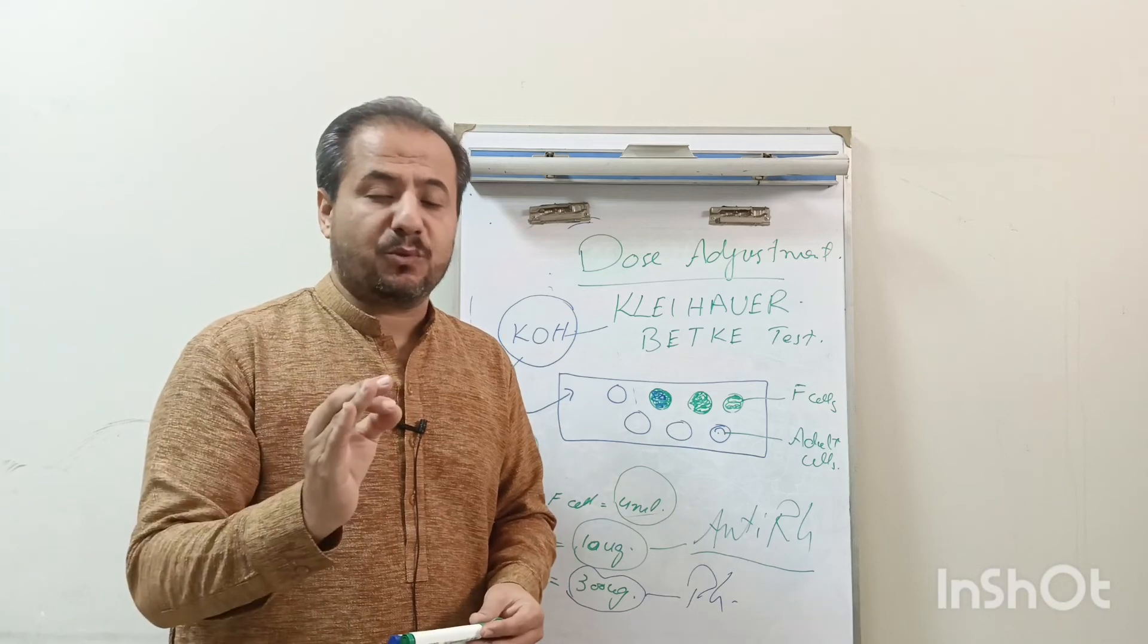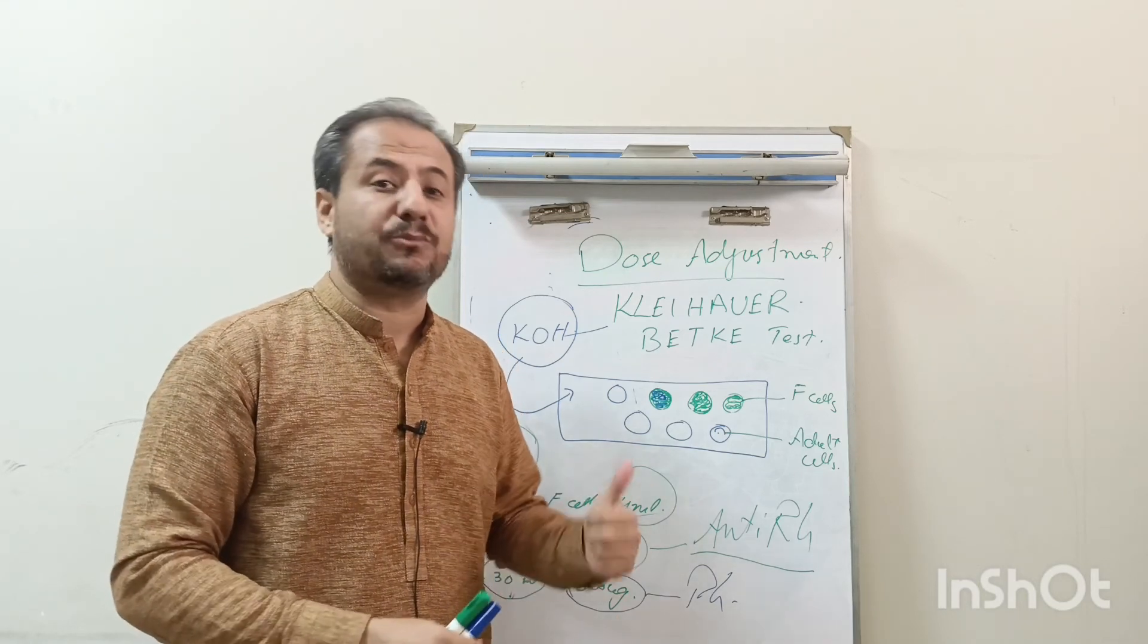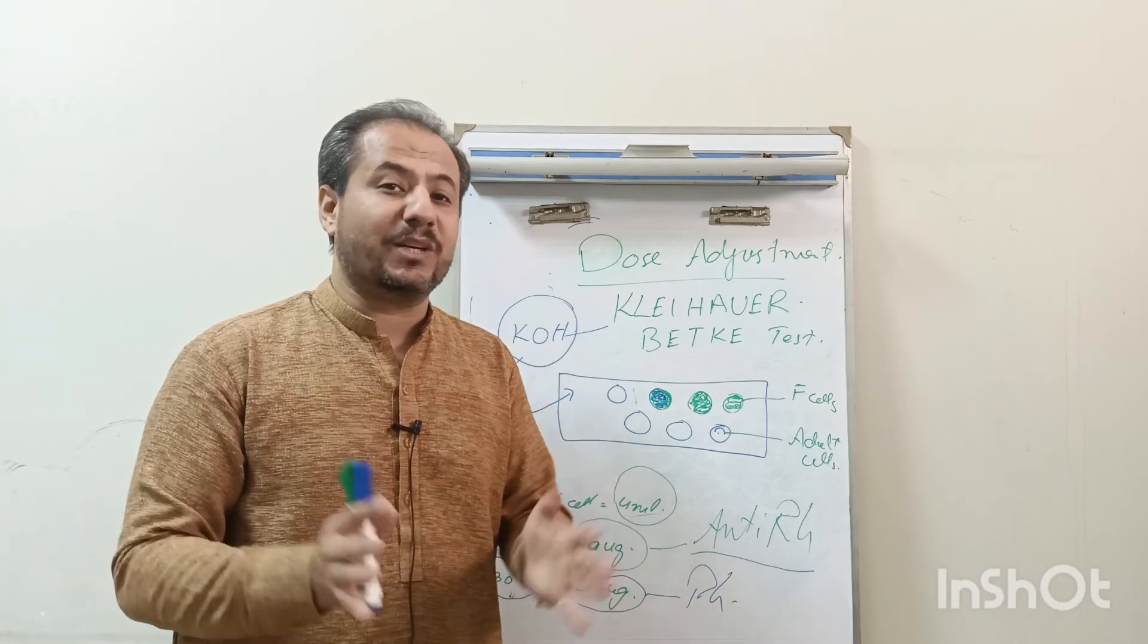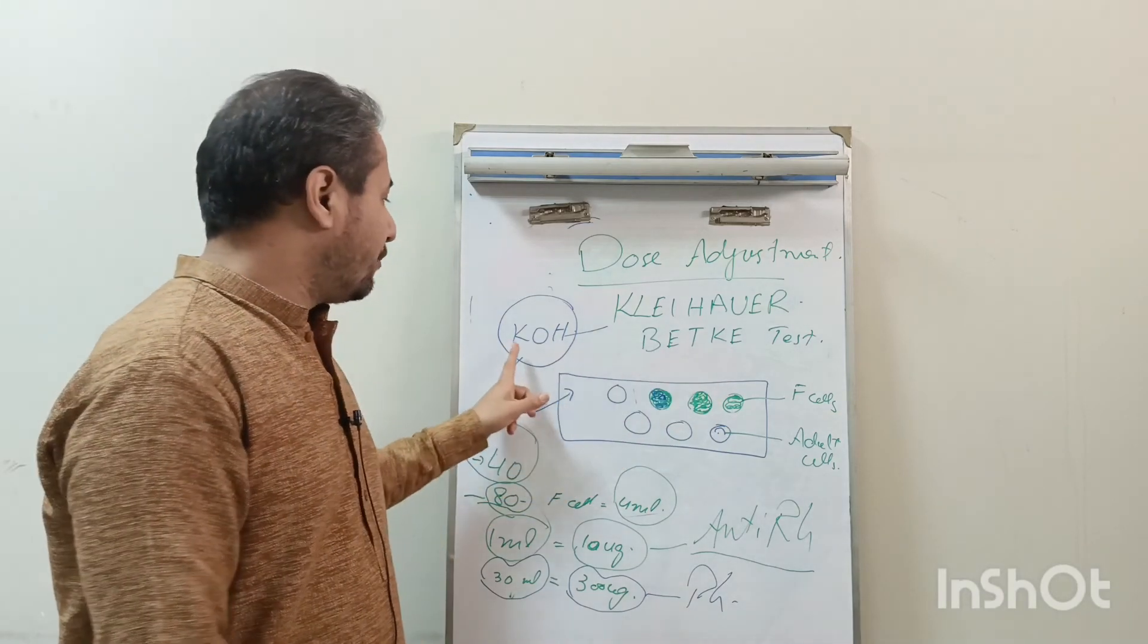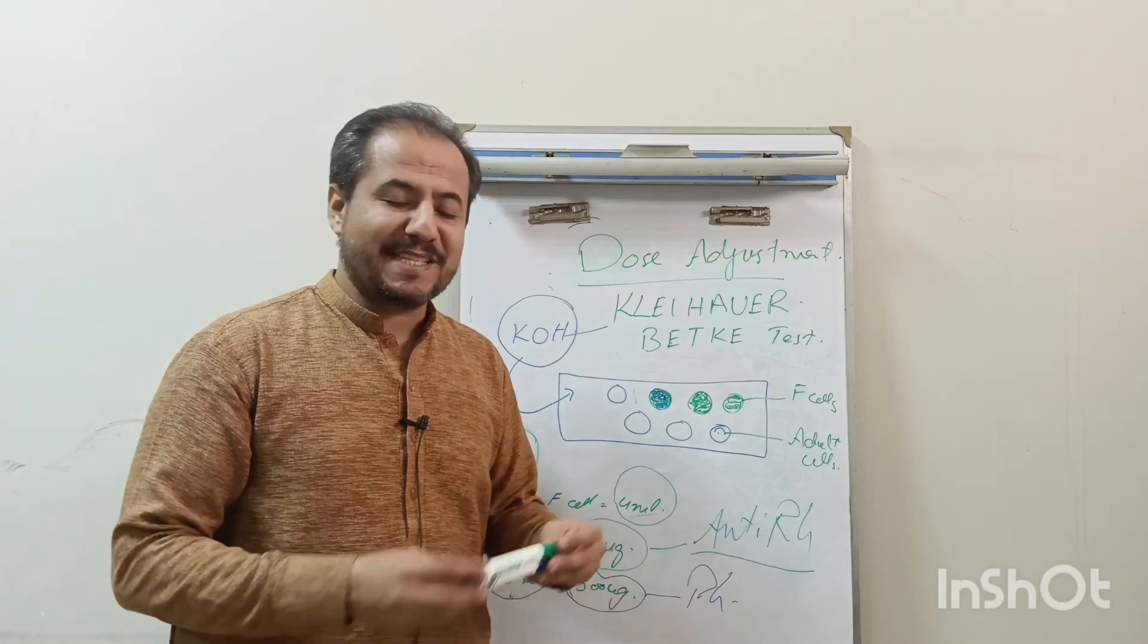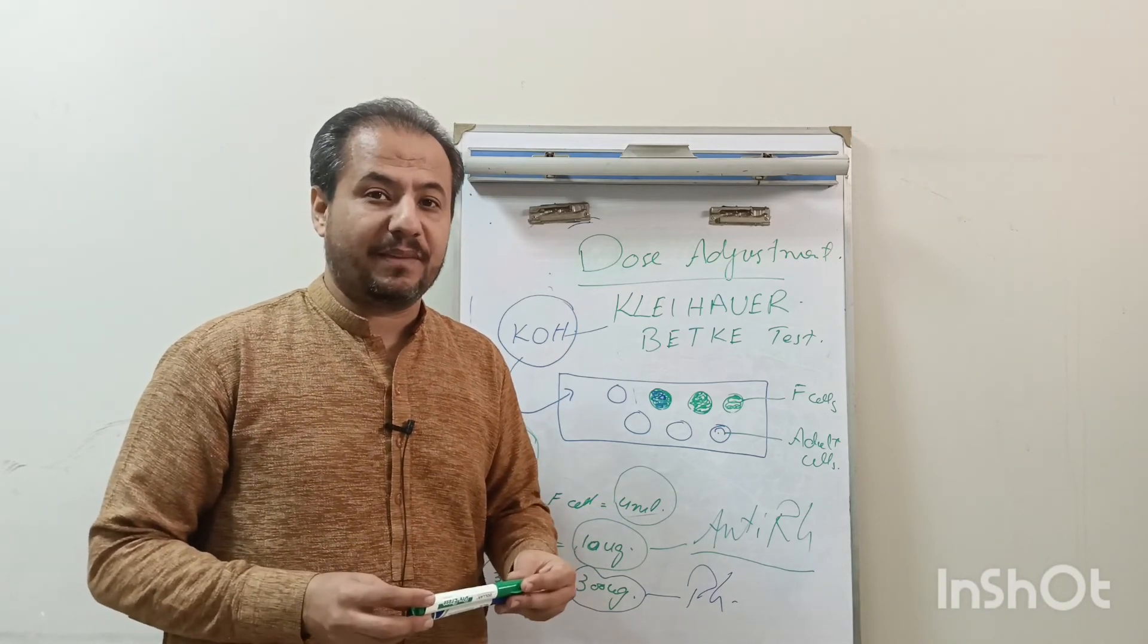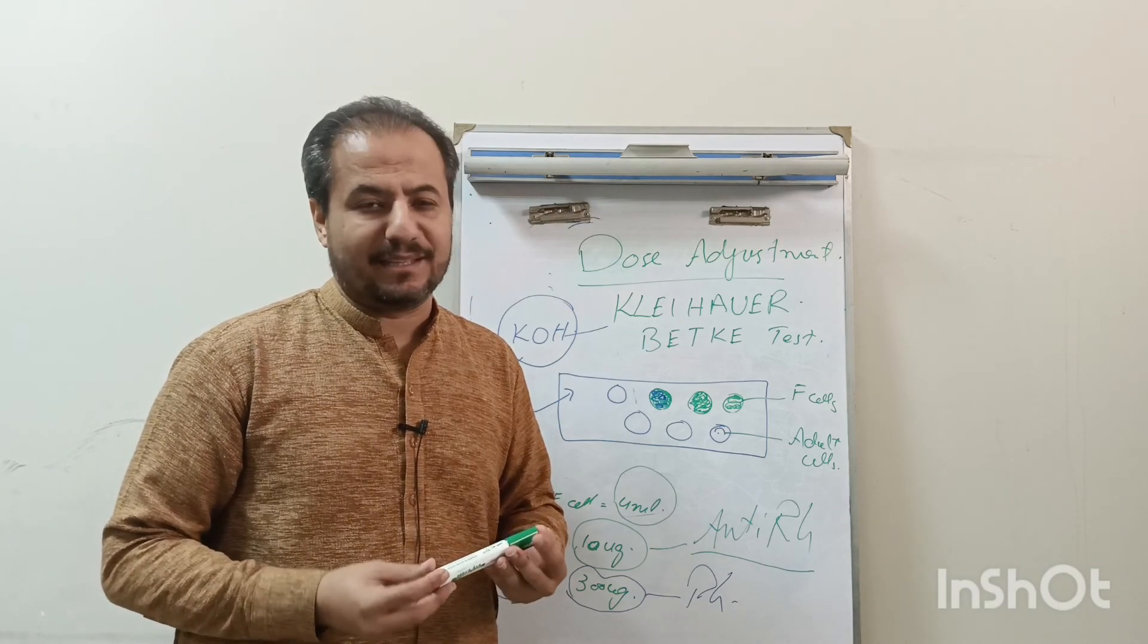Remember that on the second pregnancy, if again an Rh positive individual is developed, after delivery again RhoGAM should be administered and the dose should be calculated through Kleihauer-Betke test using potassium hydroxide as a reagent. This is basically how we can calculate the dose of RhoGAM. Hope you liked my video. Assalamu alaikum.